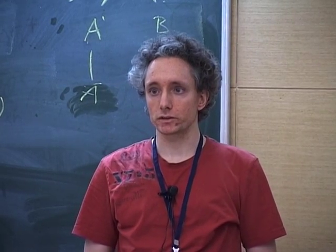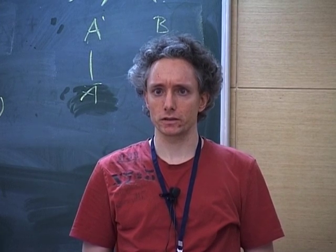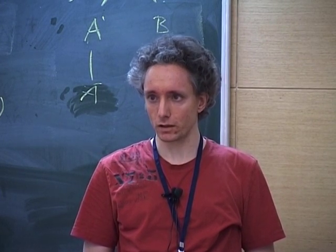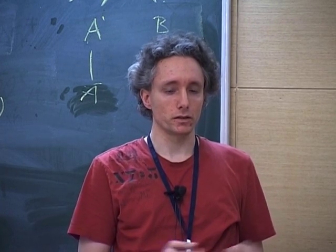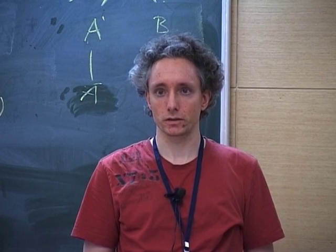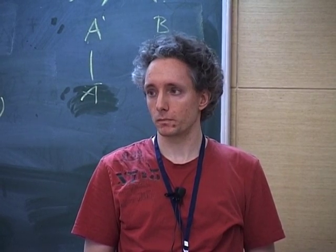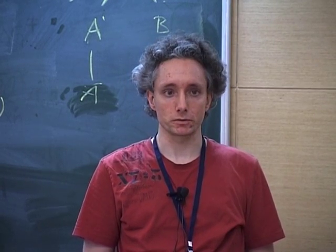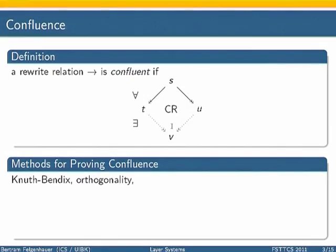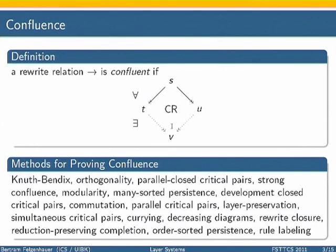So let's move on. What is confluence? Confluence just says if we have a starting term S and some rewrite sequences applying those rules that result in different subterms T and U, then we can find a common reduct, that is a term V, such that we can find rewrite sequences from both T and U to V.